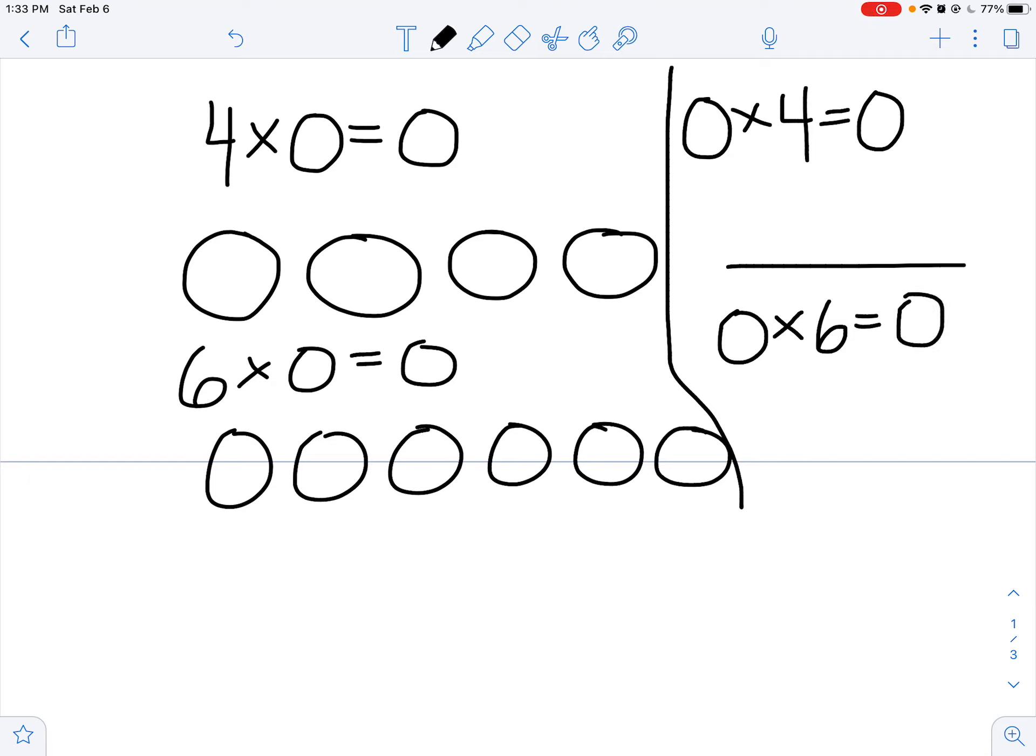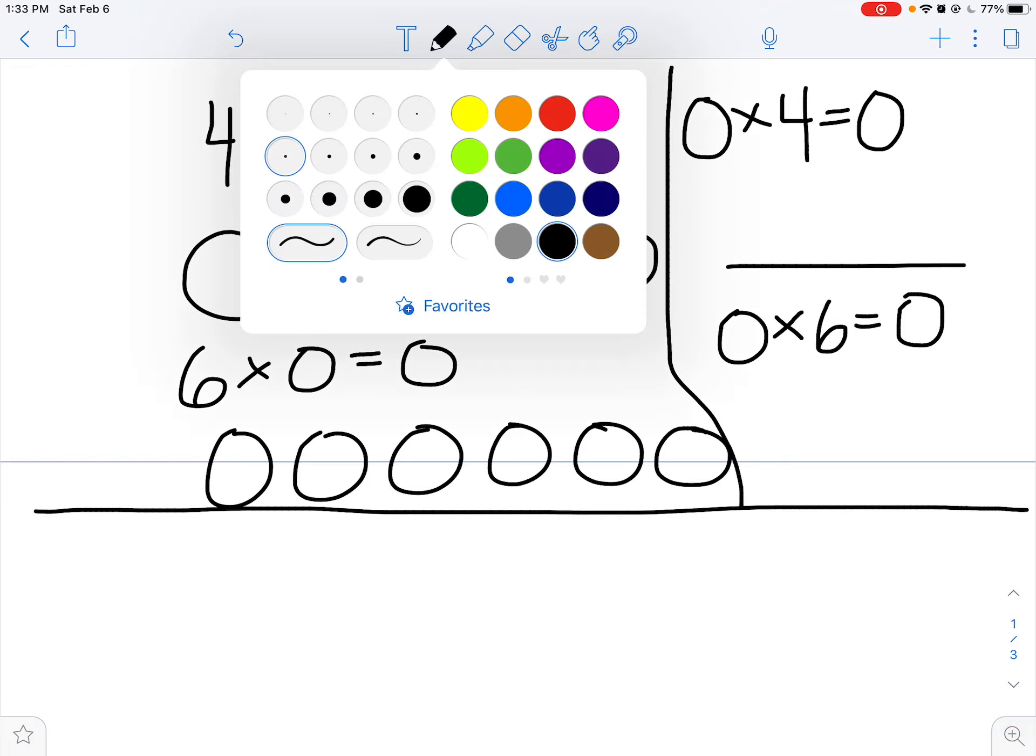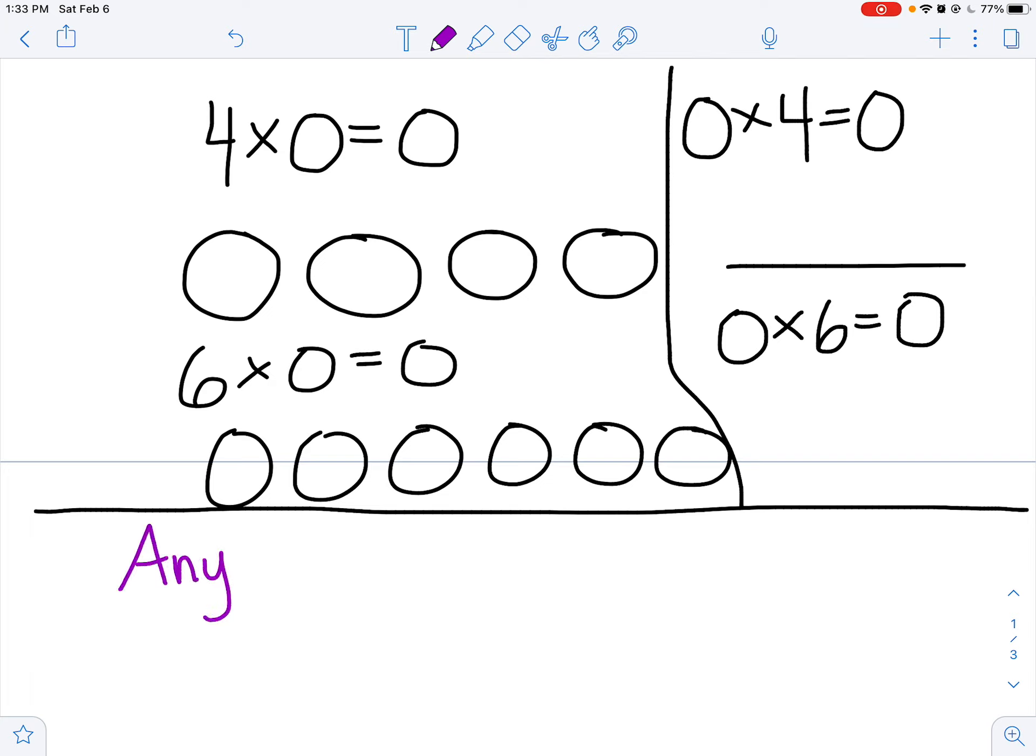So any number, that's another rule. Any number times 0. Well, I should write that as times. Times 0 equals 0. Actually, I'm going to write it as the word. Any number times 0 equals 0. So again, even if I gave you a big number, 1,472 times 0, well, I just have 0 1,472s. So I'm still left with nothing. So any number times 0 equals 0.